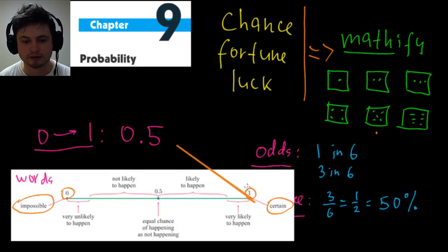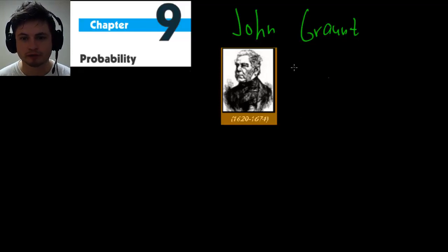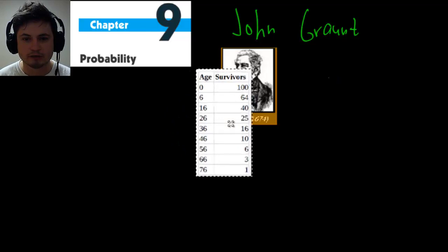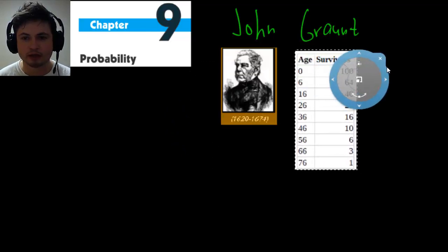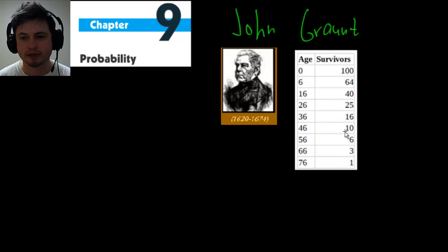One of the first people to actually use probability mathematically was John Grant in the 17th century. What he did was create a table of survivors based on age — he followed 200 people and made a table with age on the left and survivors on the right.